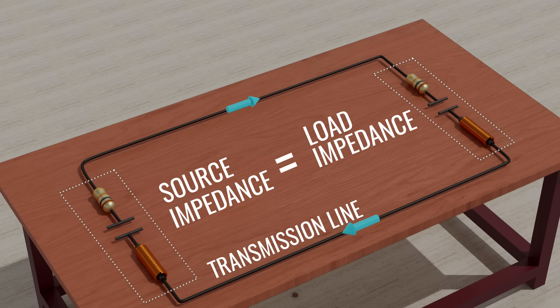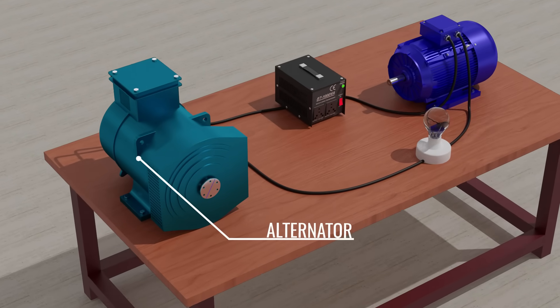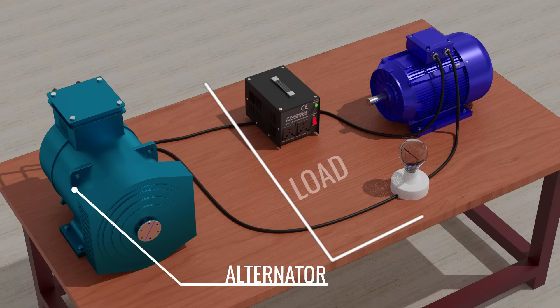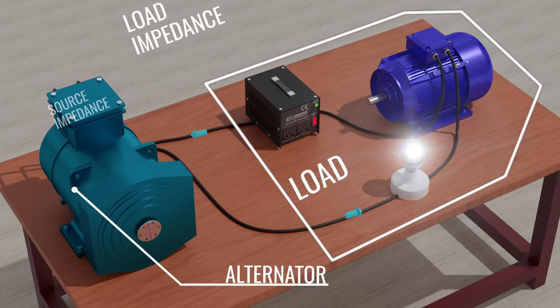For further understanding, let's take an example of a circuit containing an alternator as a source and a motor, bulb, etc. as a load. In this setup, to achieve maximum power transfer from alternator to the load, the impedance of the load must match with the impedance of the alternator.